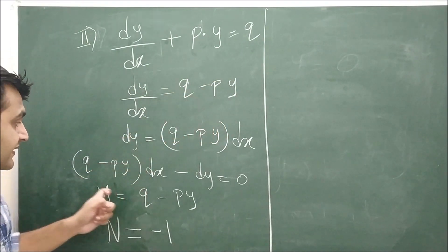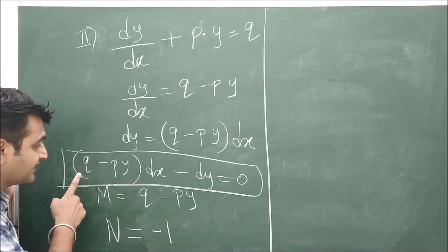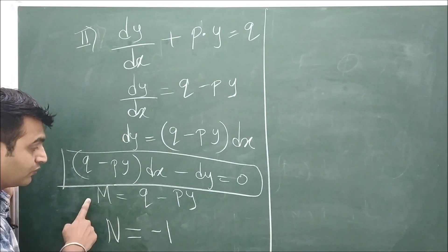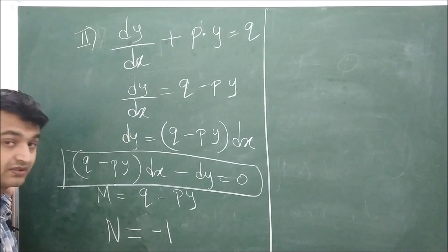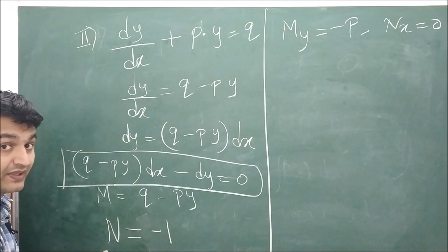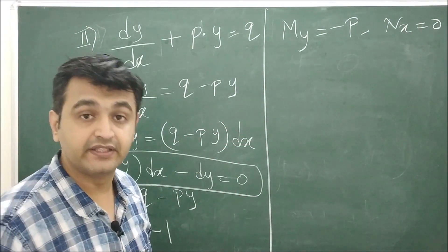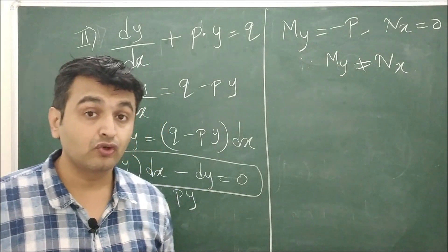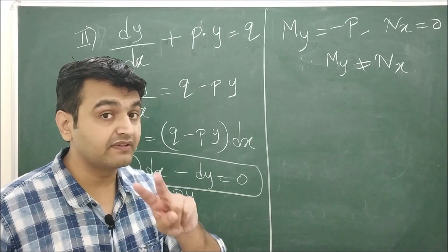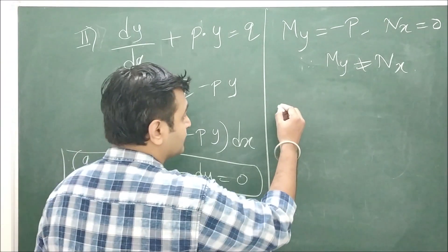Let's verify non-exactness: rearranging the equation, M is the coefficient of dx and N is the coefficient of dy. Computing partial M/partial y = -P and partial N/partial x = 0. Since these are not equal, the equation is non-exact. So we turn to the fourth method: integrating factor.